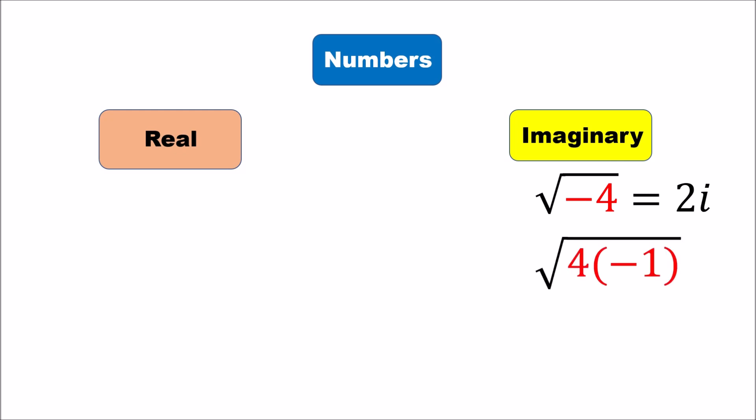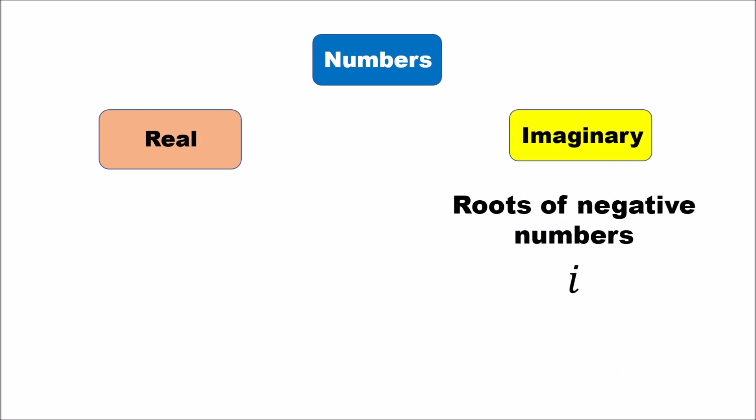We can break up negative four into positive four and negative one, then put each under a square root sign. The square root of four is two, and the square root of negative one is i, so the square root of negative four is two i. We've now figured out how to take roots of negative numbers using the symbol i.